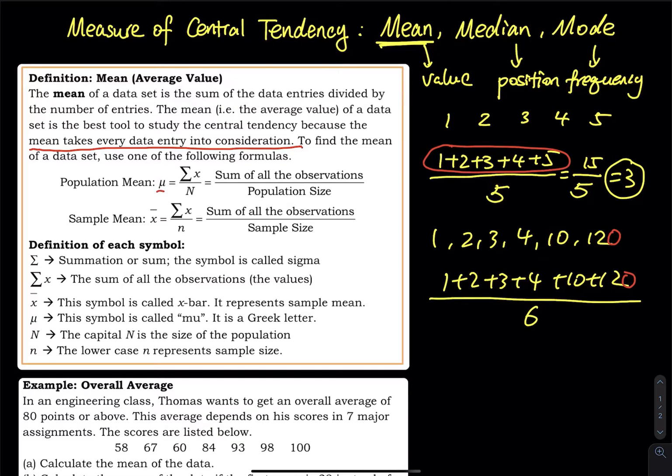For the population mean, this is called mu. Mu is a Greek letter equal to the sum of x. This symbol is called sigma—the sum of x means you add up every single value in that data, then divide by N. Capital N means population size; lowercase n means sample size.